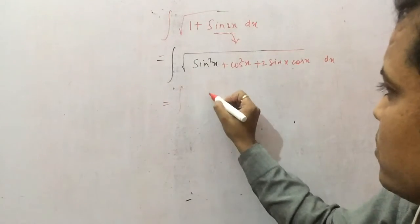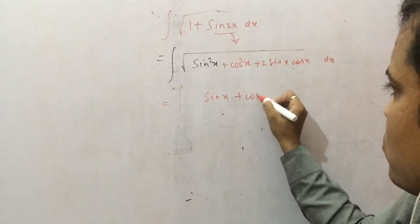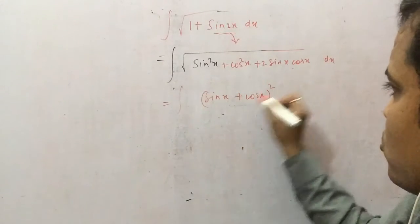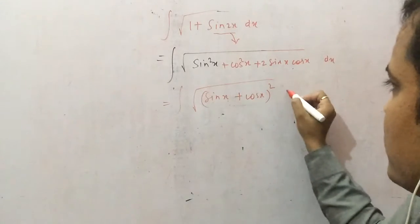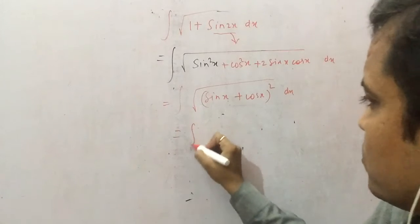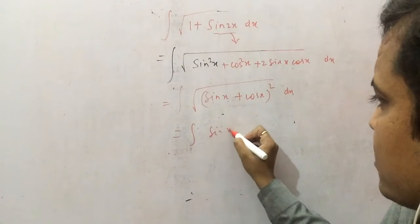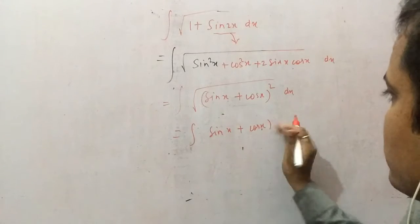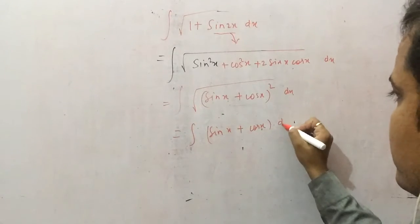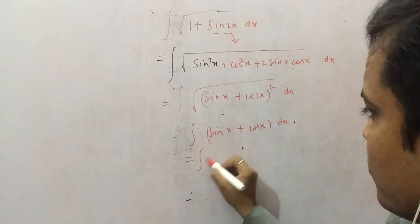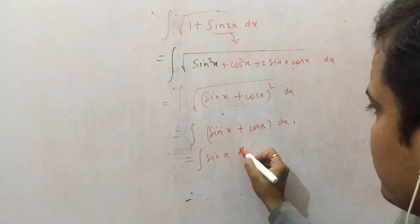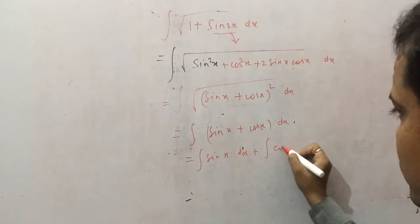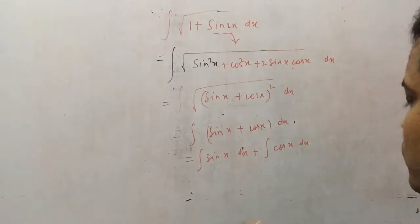So sine squared x plus cos squared x would be 1, and place the value of sine 2x as 2 sine x cos x. What would it become? Sine x plus cos x whole squared. Through this, the root will be eliminated, so you get sine x plus cos x. Now you know the standard form of the formula of integration of cos x and integration of sin x.